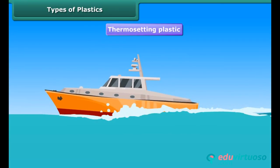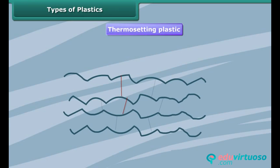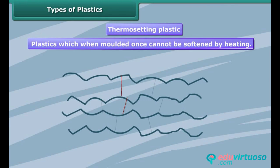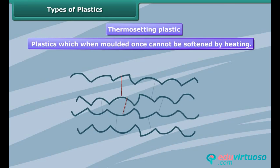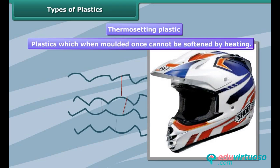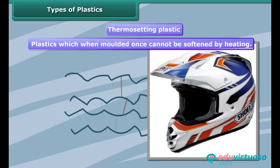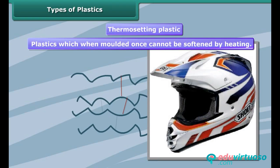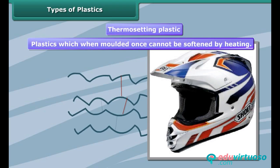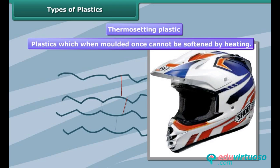Thermosetting plastics have a cross-linked arrangement of their constituent units. These can be melted and take shape once only. After they have solidified, they stay solid. On subsequent heating, they do not become soft and hence do not change their shape. Therefore, these cannot be recycled.